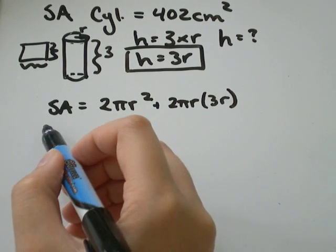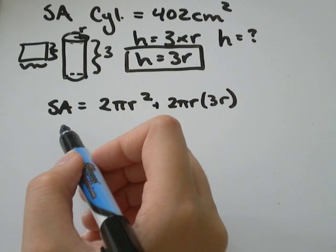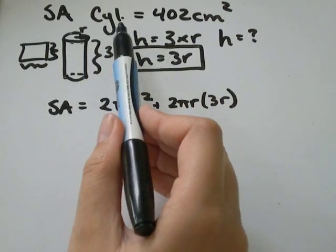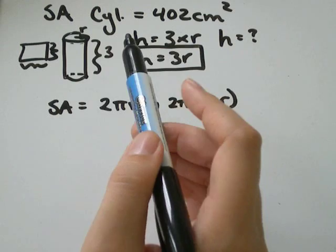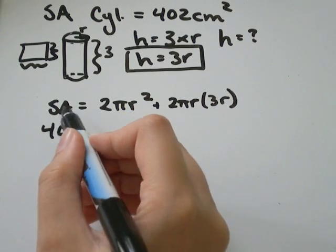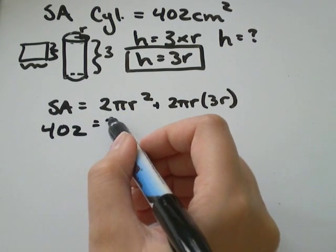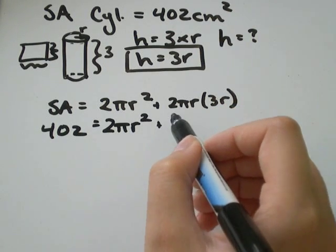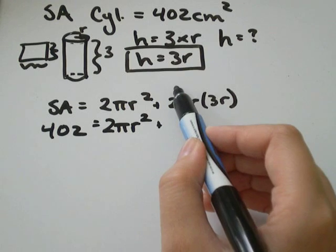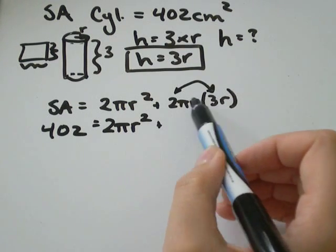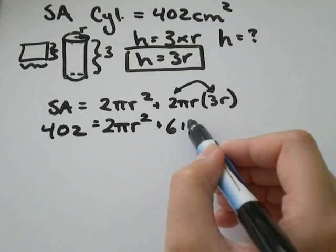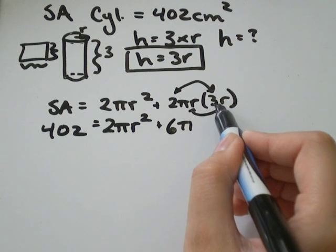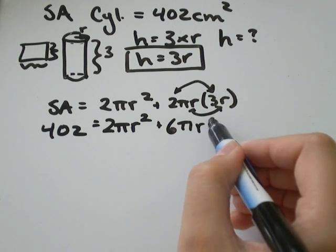So let's do substituting everything we know. We know the surface area is 402 centimeters squared. So I'll put that over here for surface area. 2πr² - we don't know the radius. Let's multiply here. The whole numbers together, 2 times 3 will be 6π and the variables, r times r will be r².